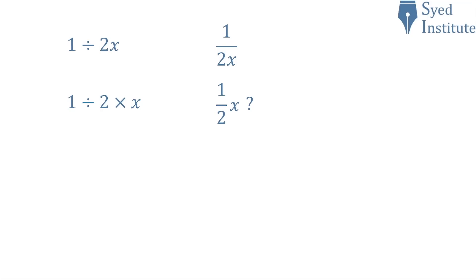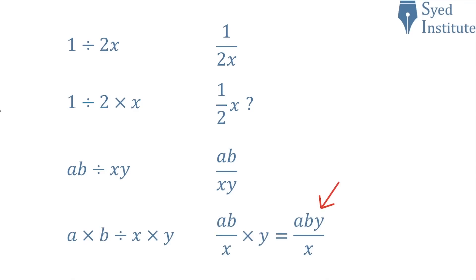If we extend the problem to ab divided by xy, most people would naturally see this as ab over xy. But the BIDMAS/PEMDAS convention — going left to right for same-precedence operations — gives ab times y over x. So BIDMAS and PEMDAS are going against how most of us naturally read these expressions. This is why the original question causes such issues: it goes against how many of us see maths written.